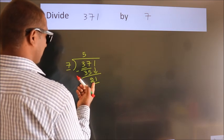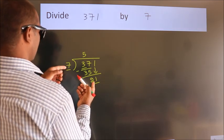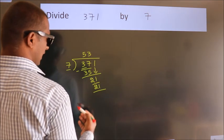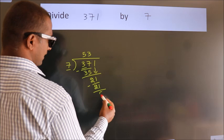When do we get 21? In the 7 table, 7 threes, 21. Now we subtract. We get 0.